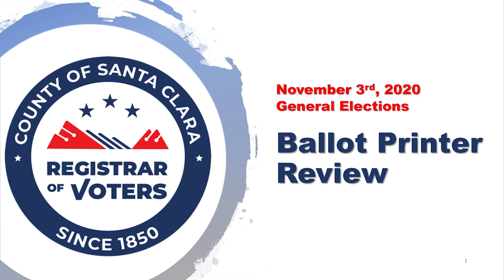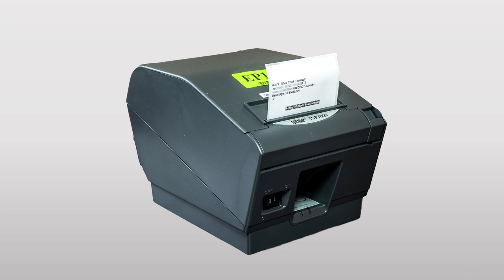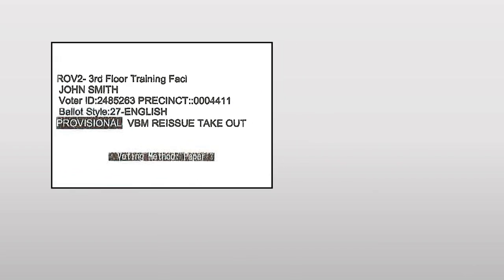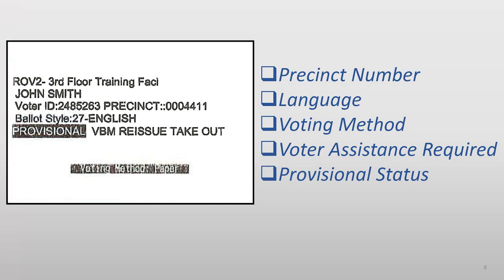Welcome to the Ballot Printer Review. The Ballot Printer aide will use the voter's print label to select their correct ballot. The print label has the precinct number, language, voting method, if the voter requested assistance, and if the voter is provisional.